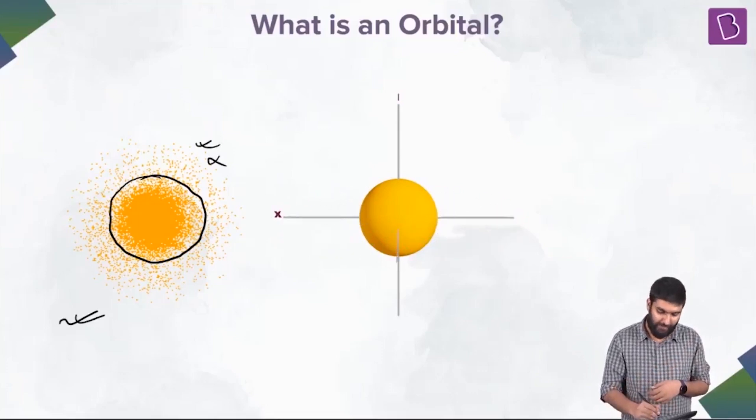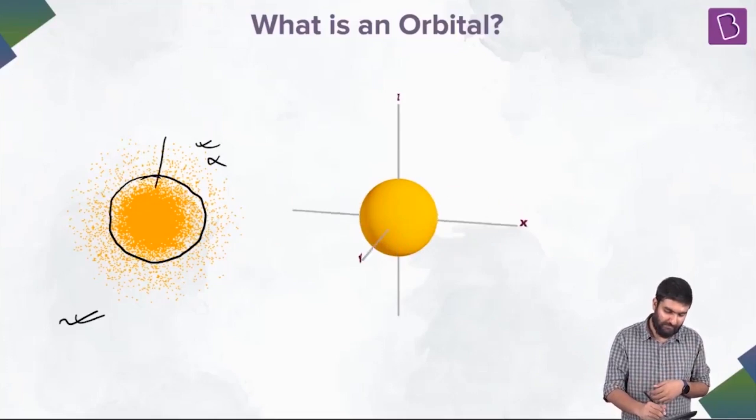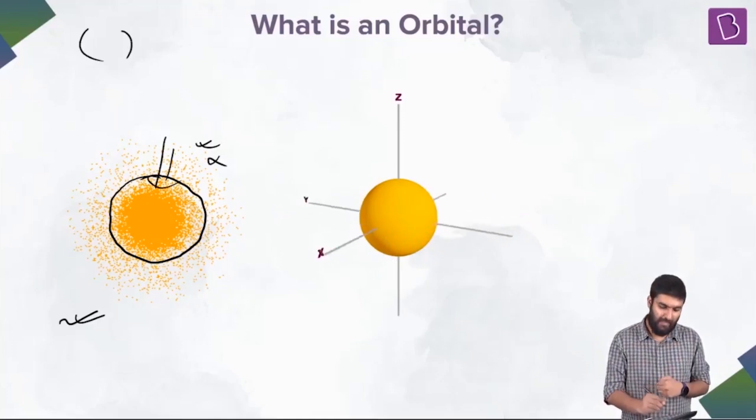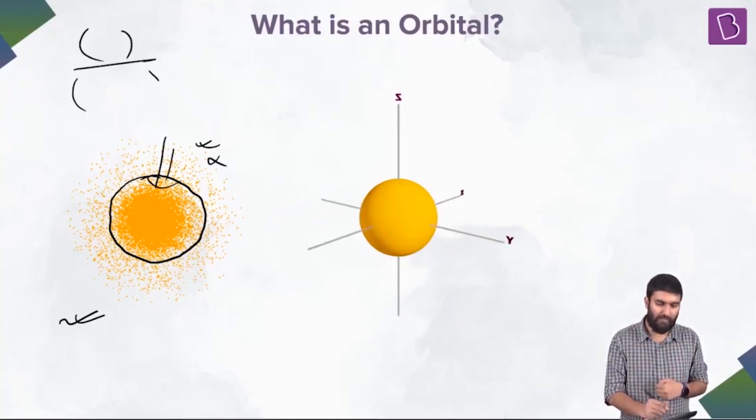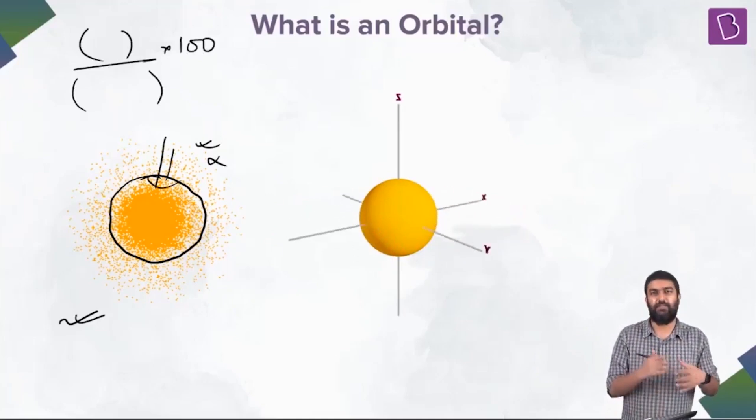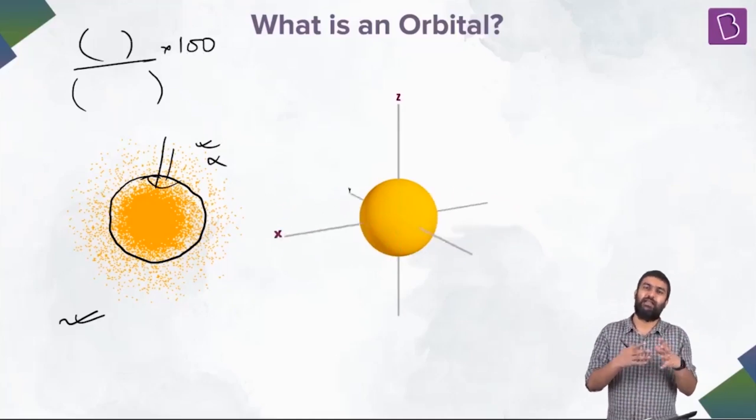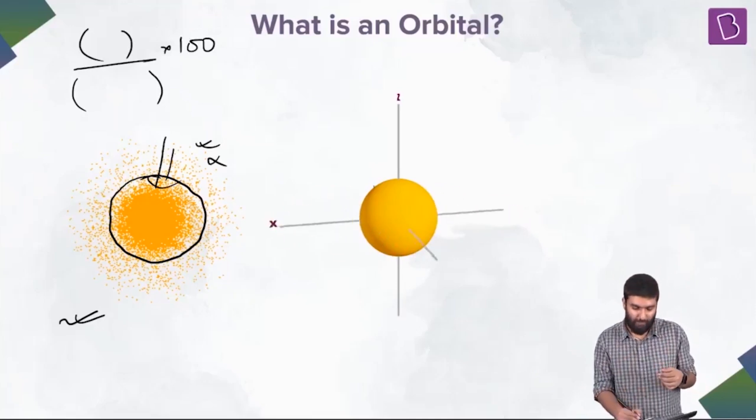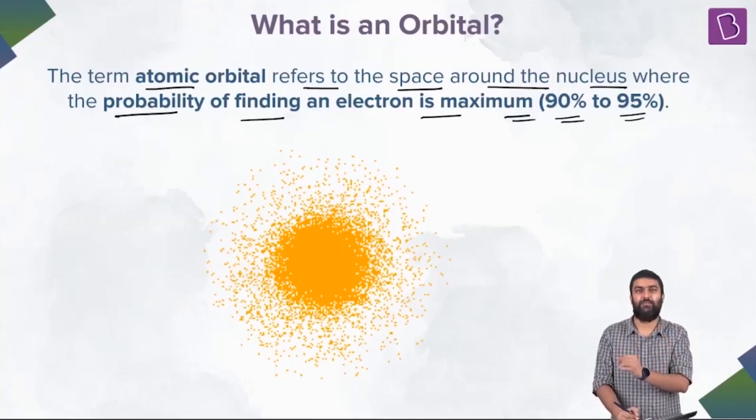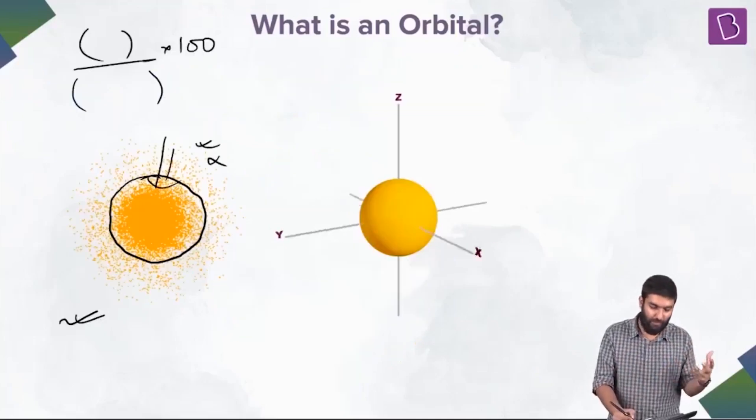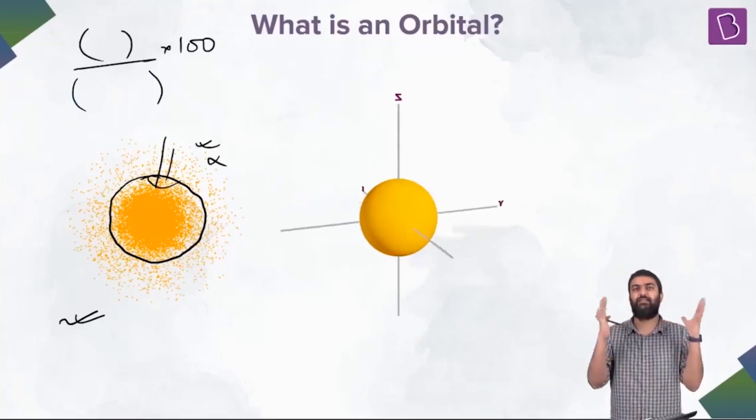Because if I count all the points inside the circle and divide them by the total points and multiplied them by 100, they still come somewhere around, let's say, 93, 94. So, what I can say is that, why do we have 90 to 95 percent? Because the 5 to 10 percent can be ignored. That is the region outside this circle.